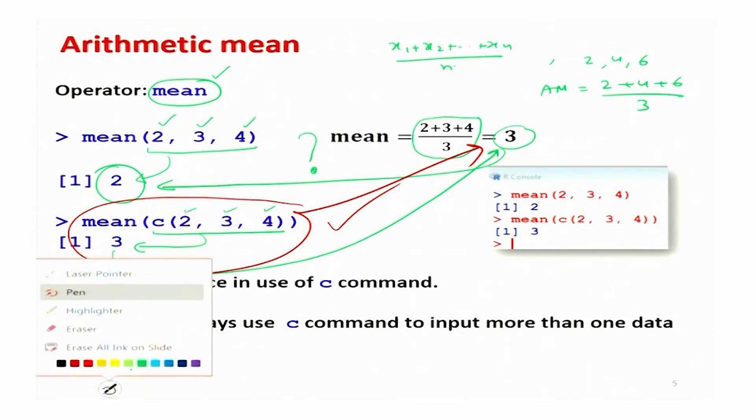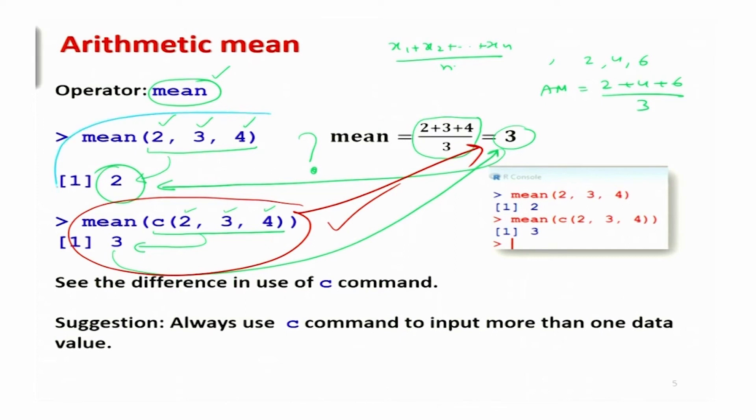The solution is clear: when using the c command you get the right answer in all three cases — minimum, maximum, and mean. So let us make a rule: whenever we input data, we always use the c command and the data vector concept. This will ensure the output is correct and guarantee there is no mistake in giving data as input to any program. That is my sincere advice — always use the c command.